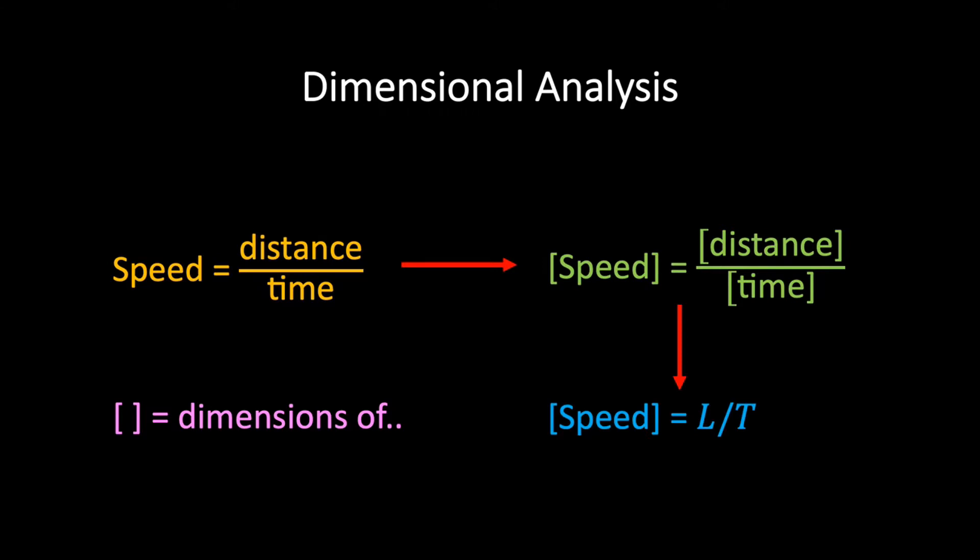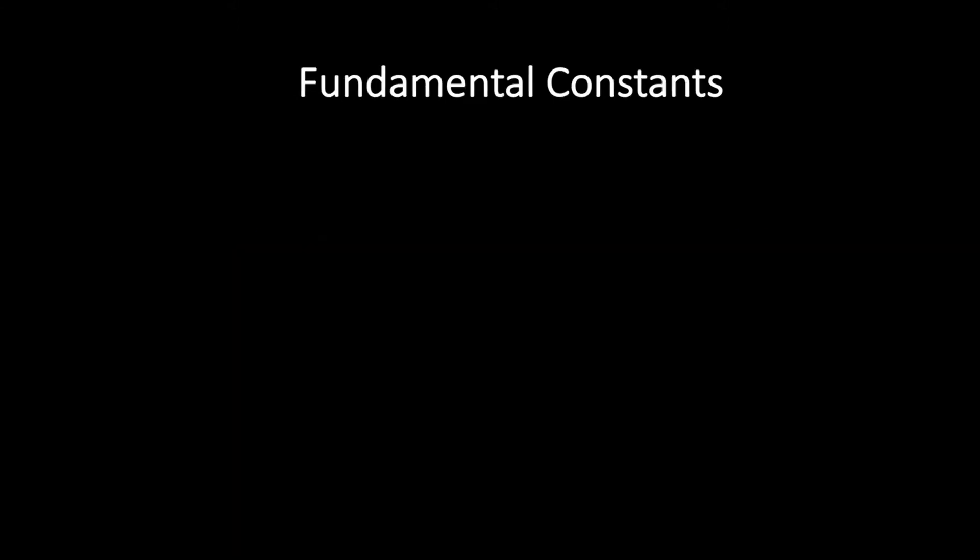Now it turns out that some physics equations are special in the sense that they contain what are known as fundamental constants. A fundamental constant is a physical quantity that is believed to be universal in nature and constant in time. The most famous example being the speed of light, which appears in the famous equation E=mc².